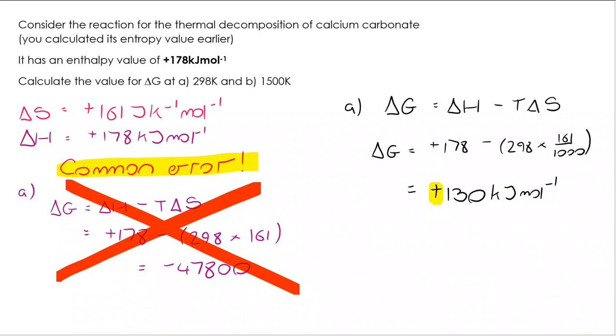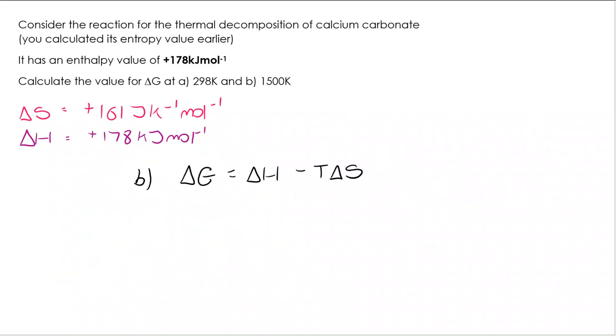Let's have a look at B now. So for B we've got delta G is delta H take T delta S. Once again I put all the figures in. My 178 is my delta H, one over a thousand my delta S, this time my temperature is 1500. So I've put that one here. When I do this calculation I get a value of negative 63.5 kilojoules per mole. Now that tells me that calcium carbonate can thermally decompose. It's feasible that it will thermally decompose at 1500 Kelvin.